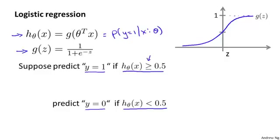I chose greater than or equal to here and less than here. If h of x is equal to 0.5 exactly, we could predict positive or negative, but I put a greater than or equal to here, so we default to predicting positive if h of x is 0.5 — but that's a detail that really doesn't matter that much. What I want to do is understand better when exactly h of x will be greater than or equal to 0.5, so that we'll end up predicting y is equal to 1.